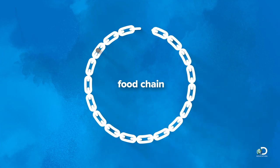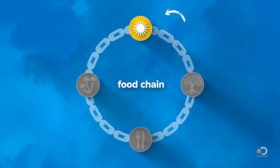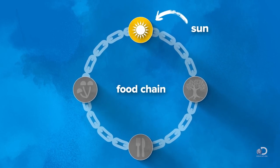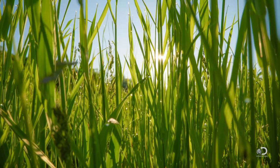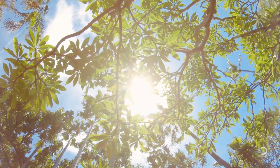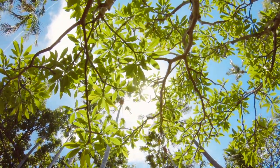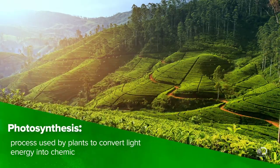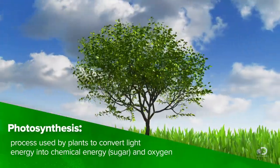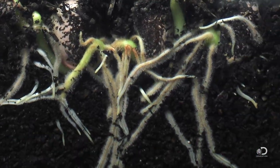The food chain has four major parts. All food chains start with the sun. Not only does the sun give us light and warmth, it's also the primary source of energy on Earth. Most plants use the sun to make their own food through a process called photosynthesis — using sunlight, carbon dioxide in the air, and minerals and water from the earth to nourish themselves.